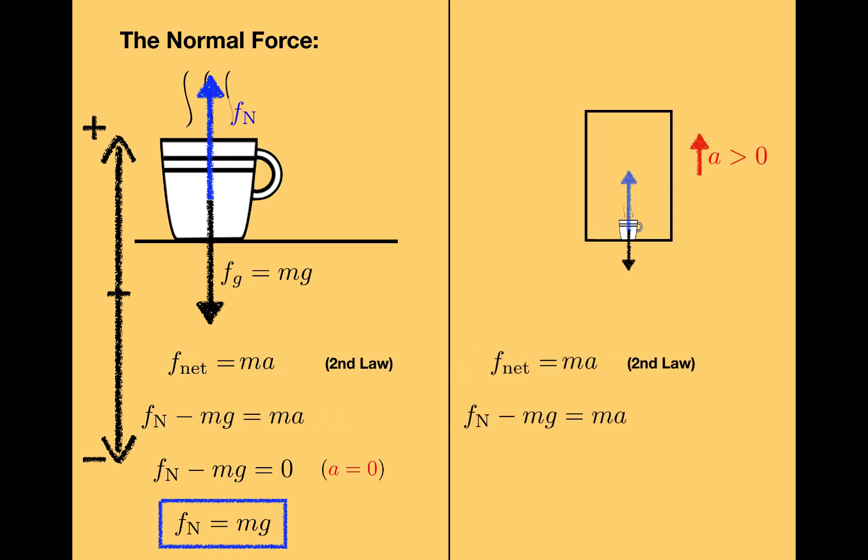The first two lines of the calculation are the same. Newton's second law still applies, and there are still two forces at work, the normal force and the gravitational force. But this time the acceleration isn't zero, it's positive. So rearranging the equation yields F sub n is equal to mg plus ma.